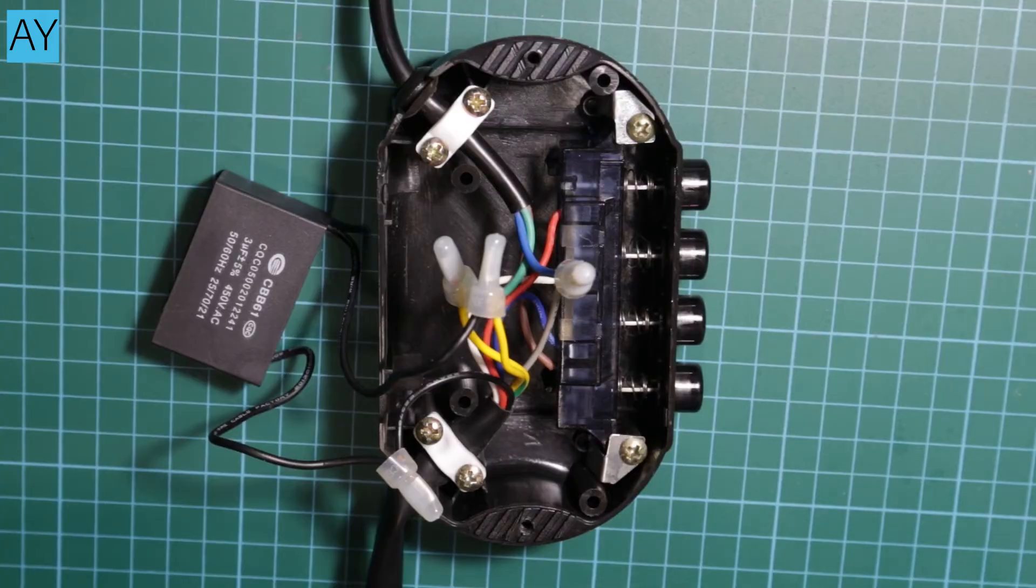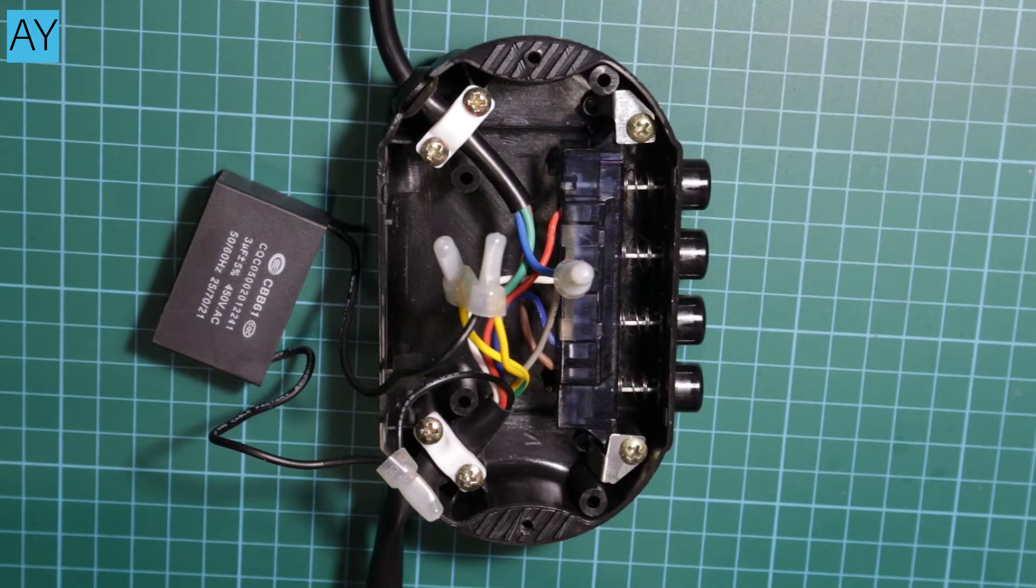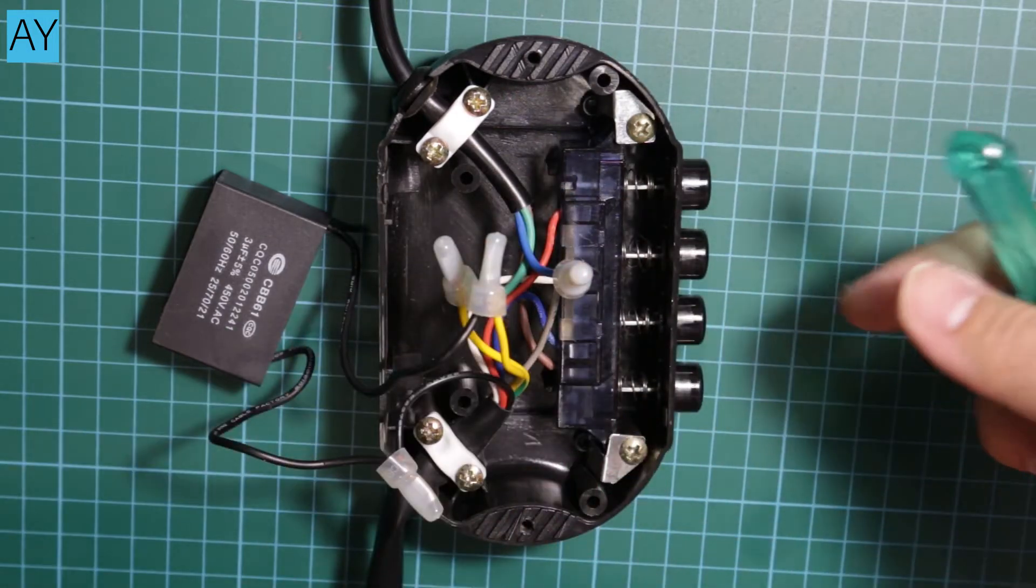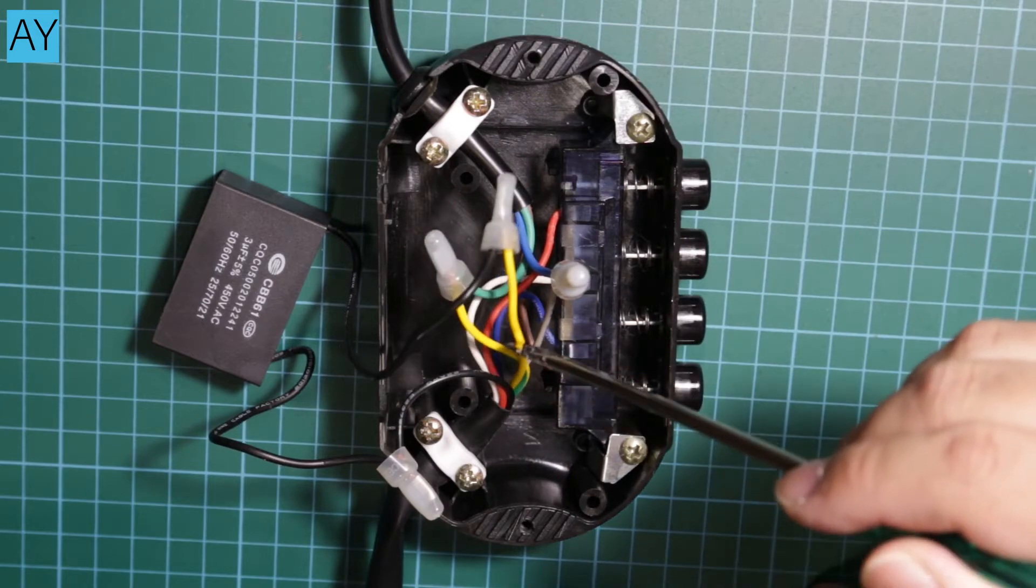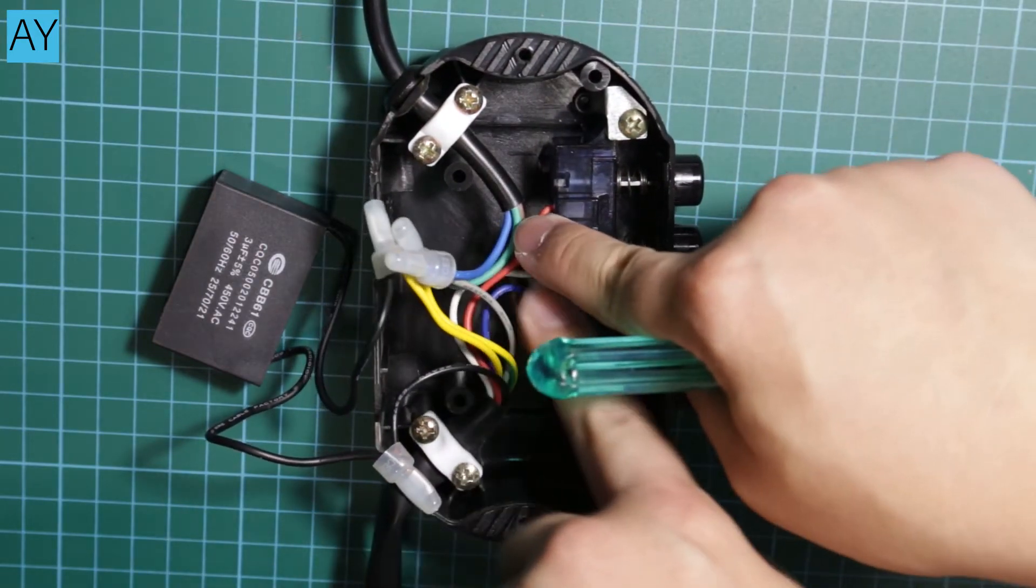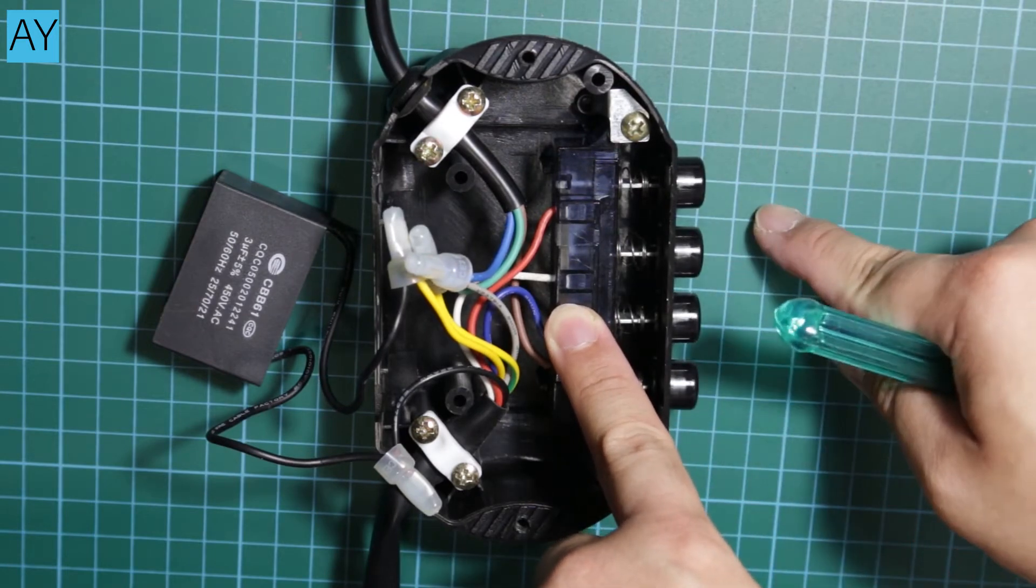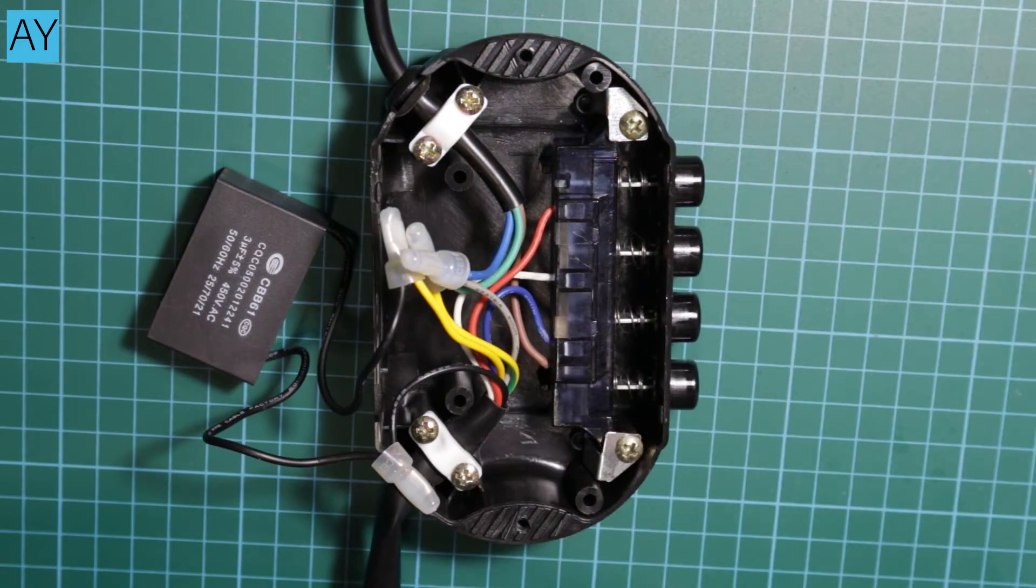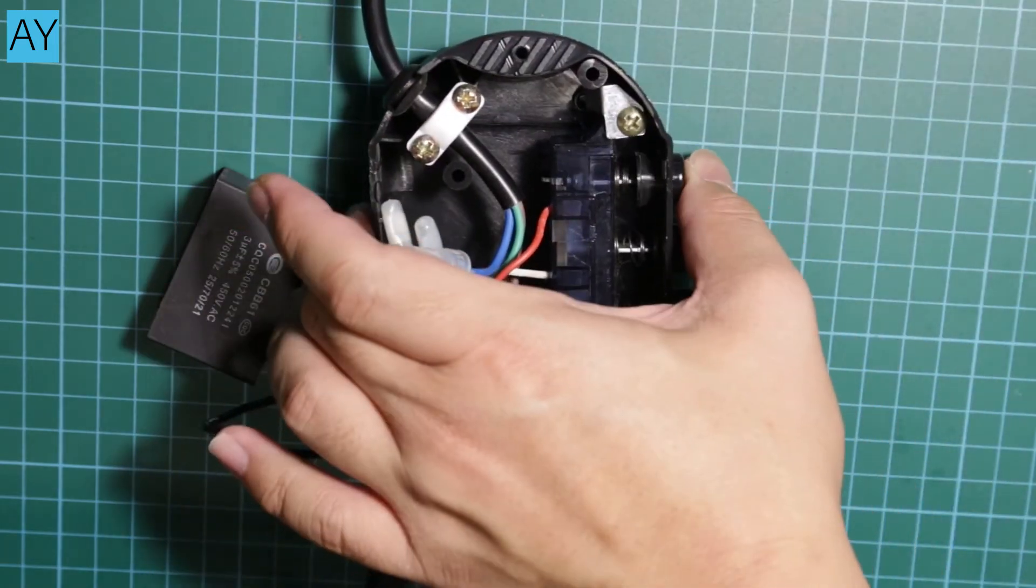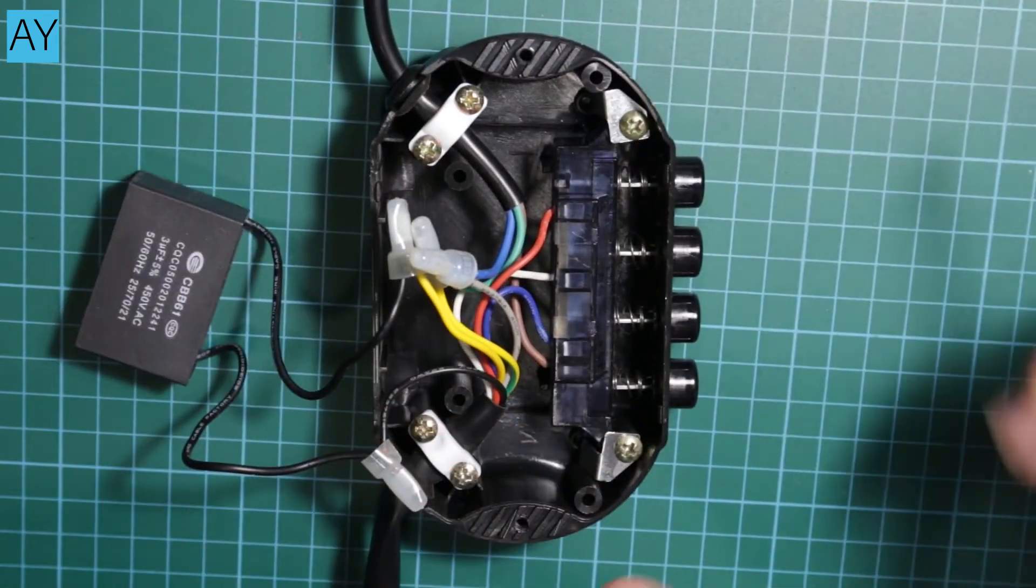A few key things you need to identify from your control module. You will need to identify your live, your neutral, your ground. You also need to identify the wire that connects to the highest speed of your fan. And in my case, this connects to the highest speed of the fan, number three. Yours will vary obviously.